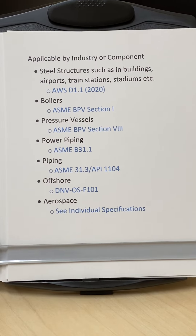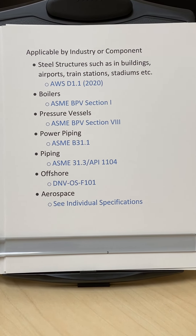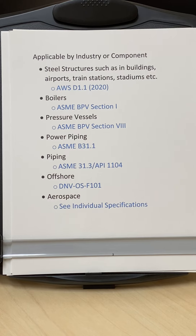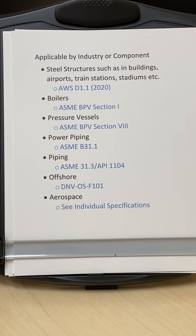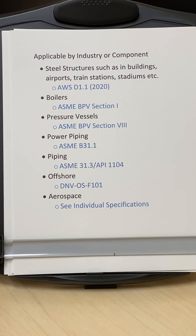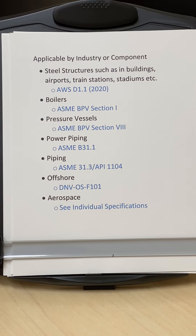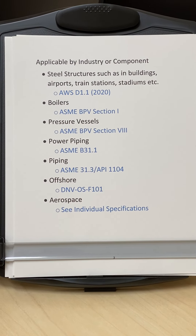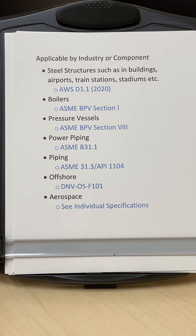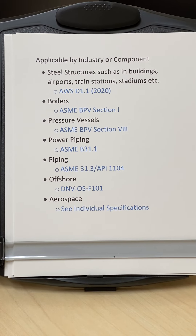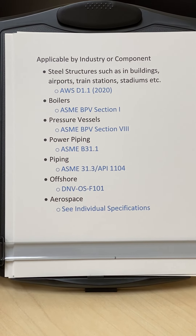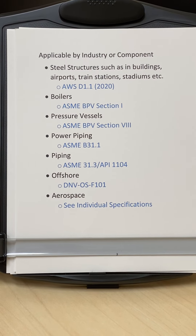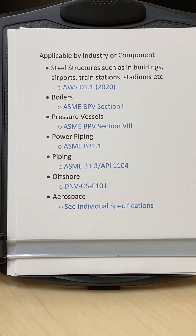Here is a brief list of codes organized by industry — it depends on what you are inspecting. If you are working on steel structures, the applicable code is D1.1 from the American Welding Society. This applies to steel buildings, airport terminals, train stations, stadiums, and the steel structure portion of buildings.